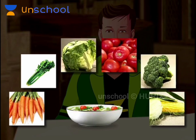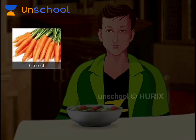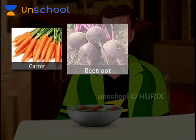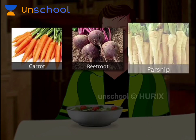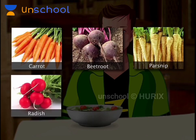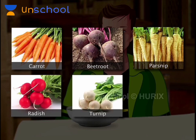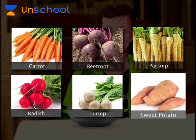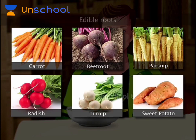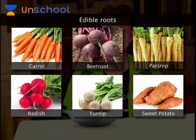We use various parts of plants as food. Let us look at the examples of some edible plant parts. Carrot, beetroot, parsnip, radish, turnip and sweet potato are all examples of edible roots.